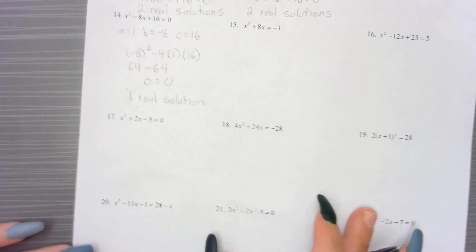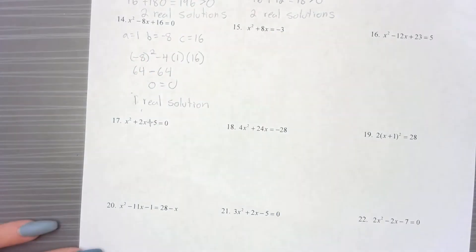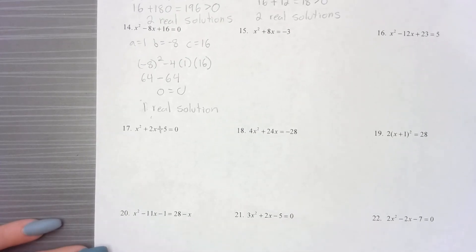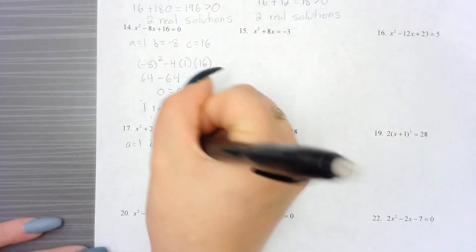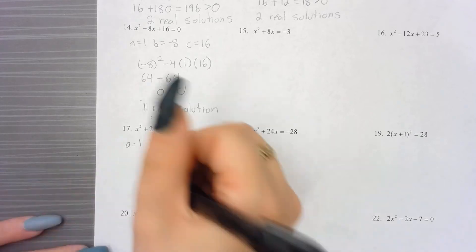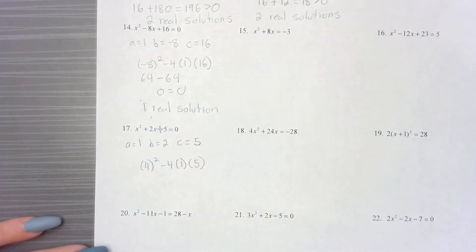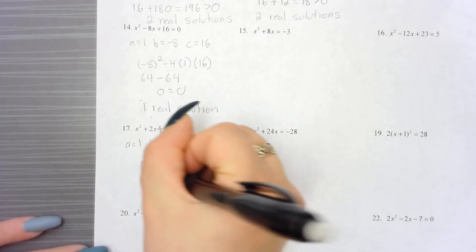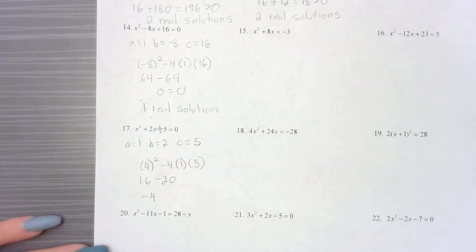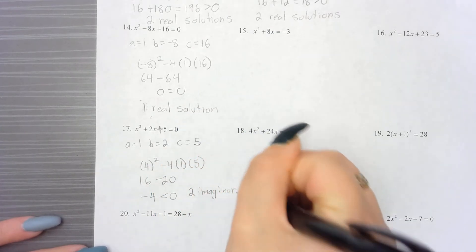For number 17, we're going to change the minus 5 to a plus 5. So a is 1, b is 2, and c is 5. We plug in: b squared minus 4ac, so 4 squared minus 4 times 1 times 5. 4 squared is 16, and negative 4 times 1 times 5 is minus 20. That gives us negative 4. Because this is less than 0, we would have two imaginary solutions.